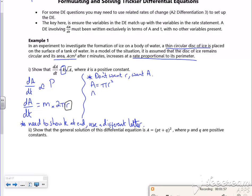So I can divide through by π and then square root it to give me R. So now my dA by dt is M times 2π times the square root of A over π.